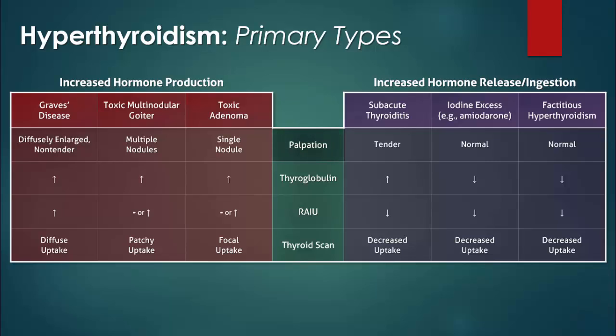Upon palpation, the thyroid is usually diffusely enlarged but non-tender in patients with Graves' disease. There are multiple nodules in toxic multinodular goiter, while a single nodule may be felt in toxic adenoma.